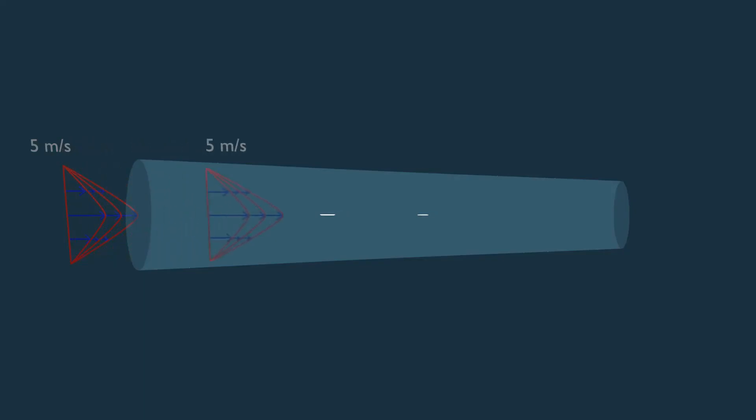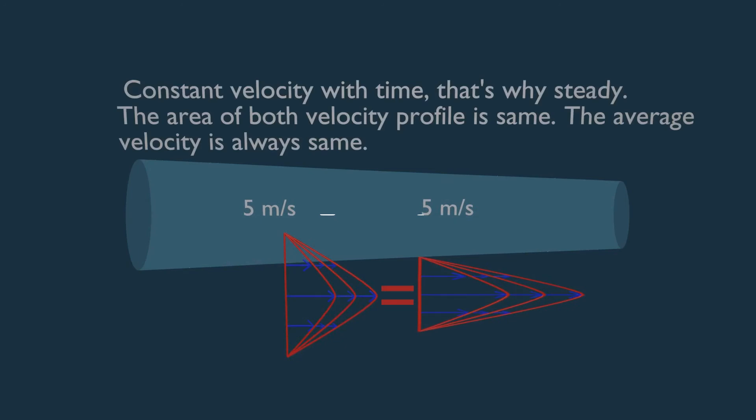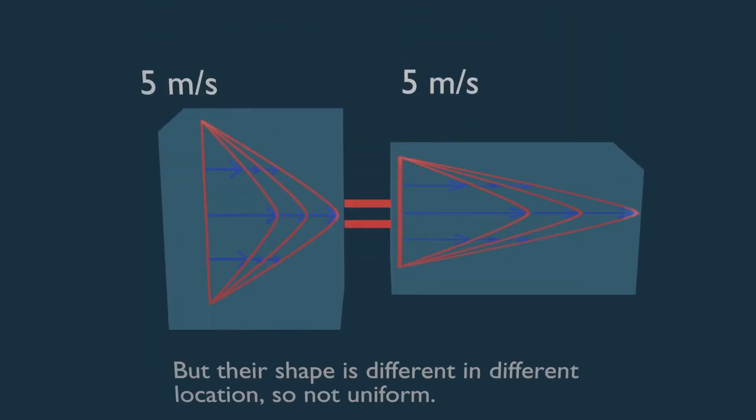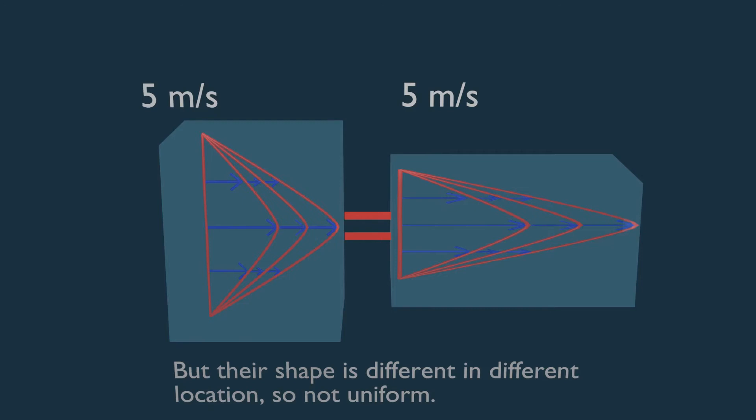If you calculate the average area between these two velocity profile shapes, you will get the same result, but their shape is different at different locations, so this is not uniform flow.